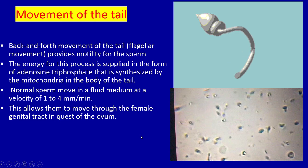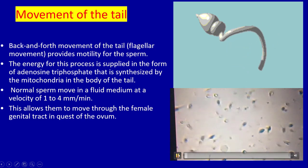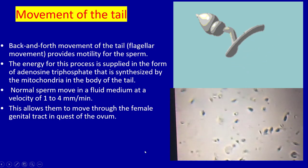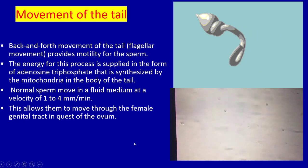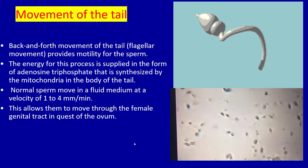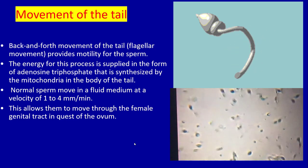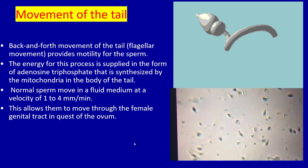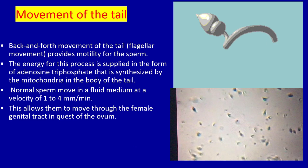Normal sperm move in fluid media at a velocity of 1 to 4 millimeters per minute. This allows the sperm to move through the female genital tract in quest of the ovum. The movement of the flagellum provides this motility, and the energy is supplied by the mitochondria which contain adenosine triphosphate.